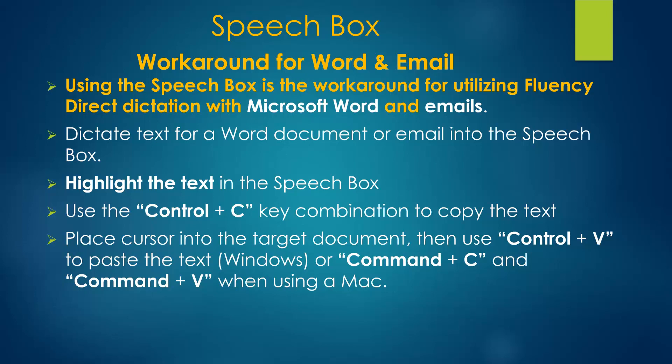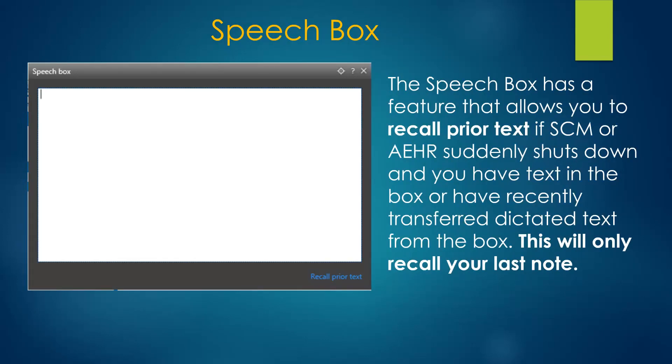The Speech Box may be used as a workaround for dictating into other programs. Dictate what you will into the Speech Box, then highlight the text with your mouse and use the keyboard shortcut Ctrl-C to copy the text into the Windows clipboard. Then paste the text into an email or a Word document with Ctrl-V. The Speech Box will temporarily retain the last entry, so in case of a power failure or accidental shutdown, your text might be salvageable by clicking on Recall Prior Text.